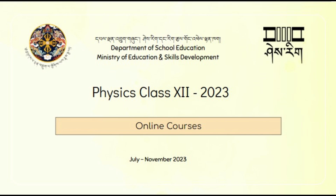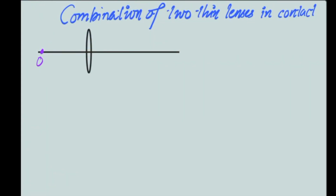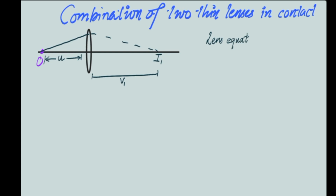Good day and warm greetings to all classical science students. Today we are going to look at the derivation on the combination of two thin lenses in contact. We have an object here producing a ray of light going to a position labeled i1. We consider the object distance to be u and the image distance as v1. We know the lens equation: 1/f = 1/v minus 1/u.